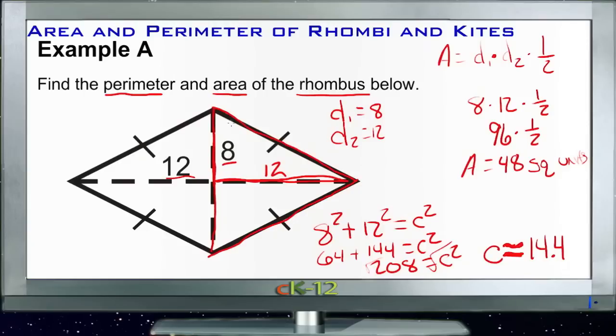So side C then is 14.4 units, and we have 1, 2, 3, 4 of those around the outside. So our overall perimeter is going to be 4 times 14.4, which would be 40, 56, and 16, so 57.6 approximately. About 57.6 units around the outside.